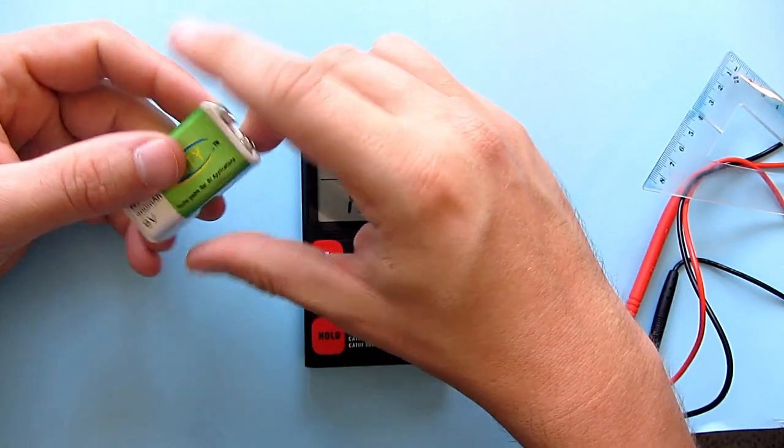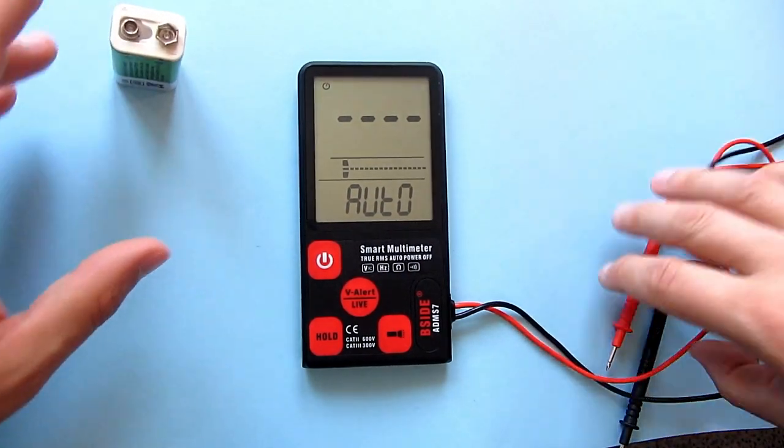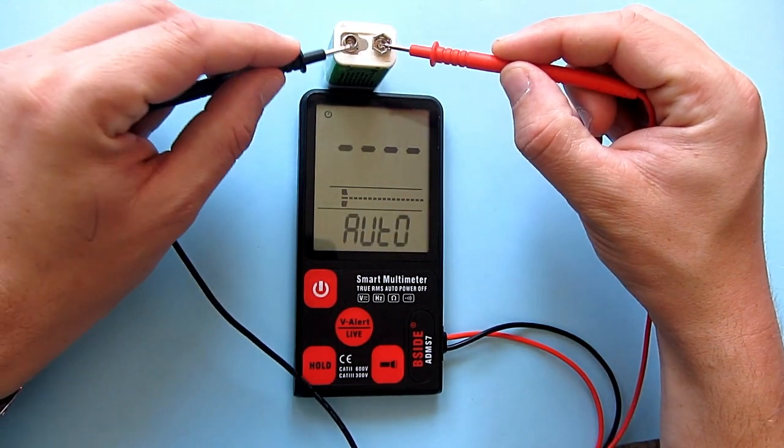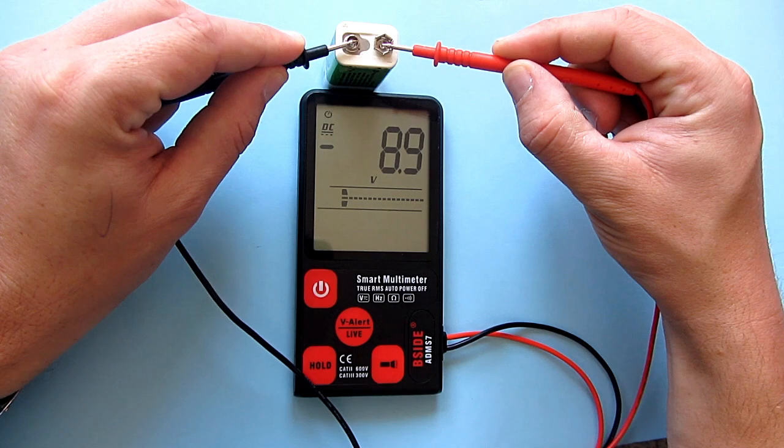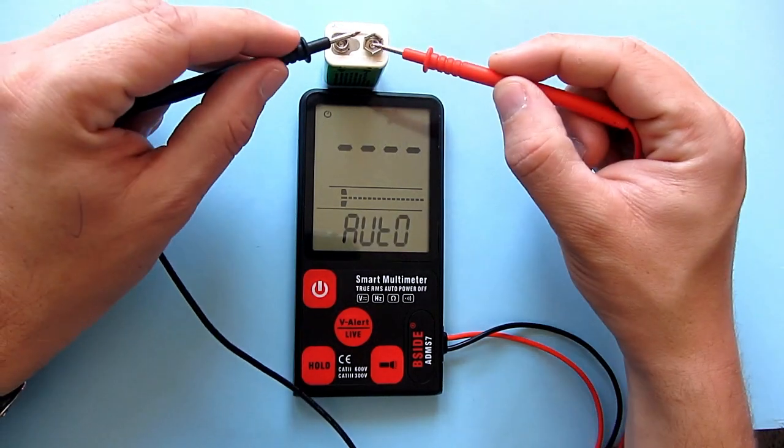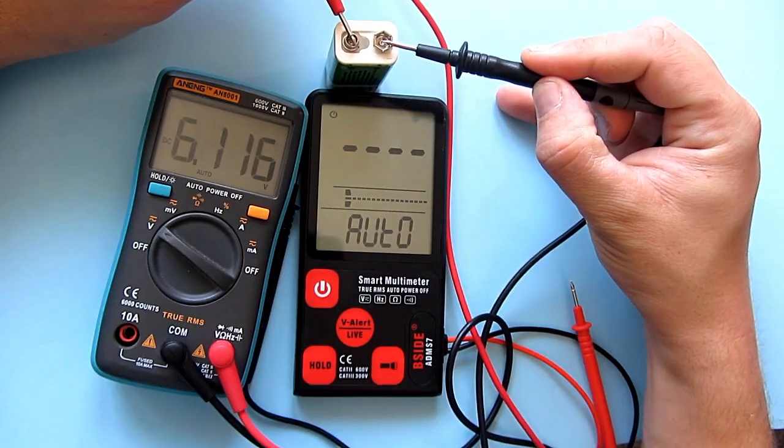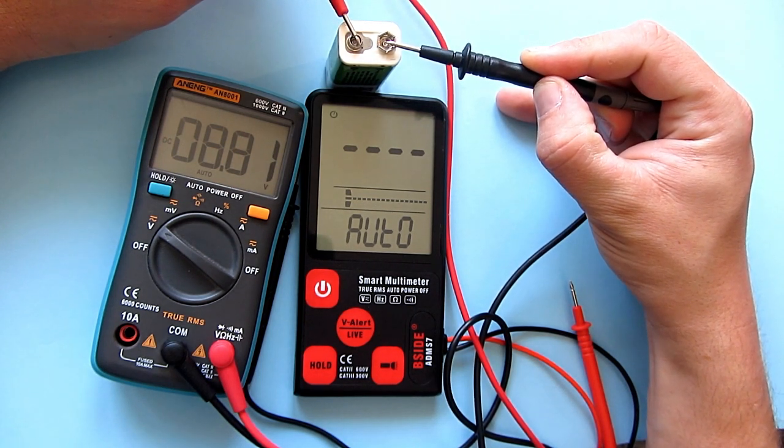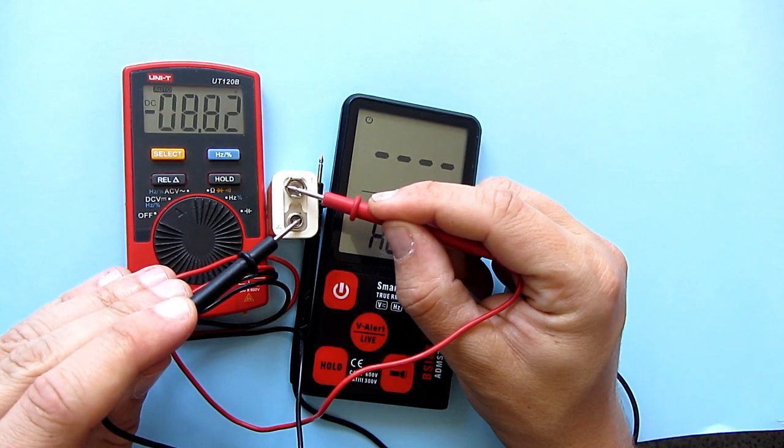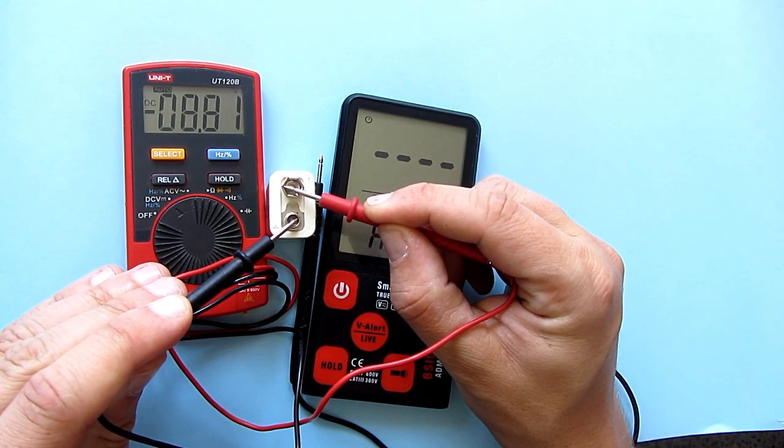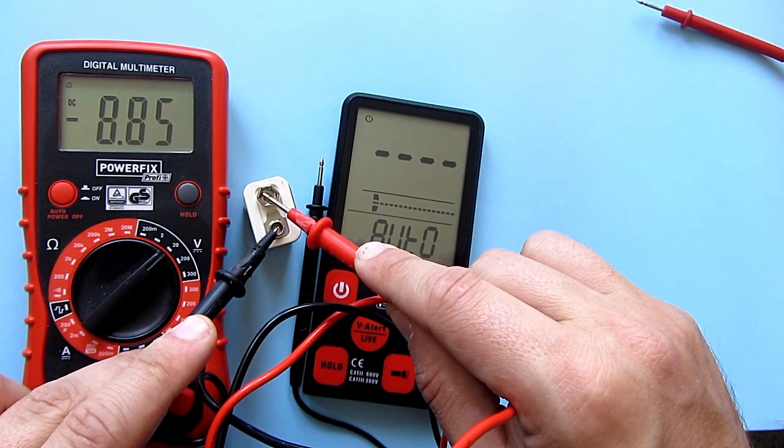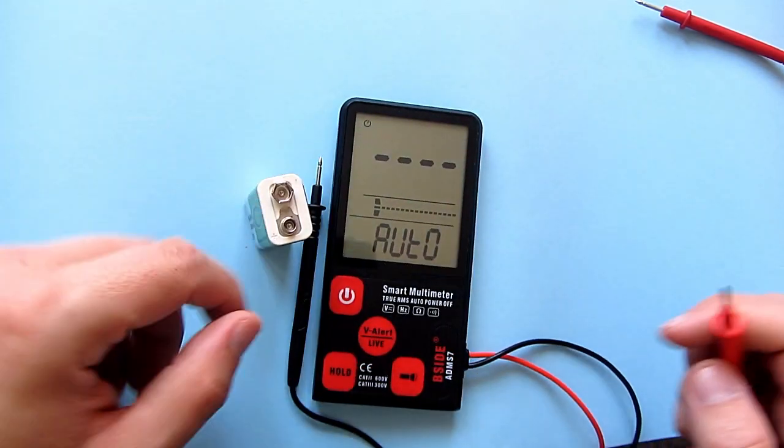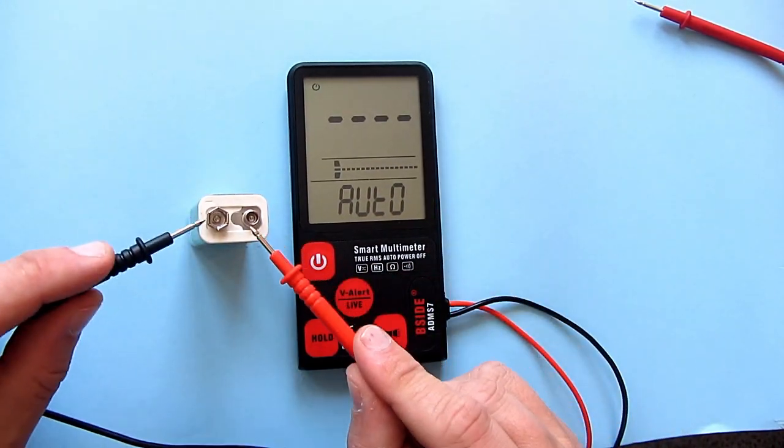So let's measure voltage of this battery. This smart multimeter says 8.9 volts. Let's measure the same battery with my other multimeters. My most used multimeter Yang says 8.81. This Unity multimeter says 8.82 and this Powerfix multimeter 8.85.